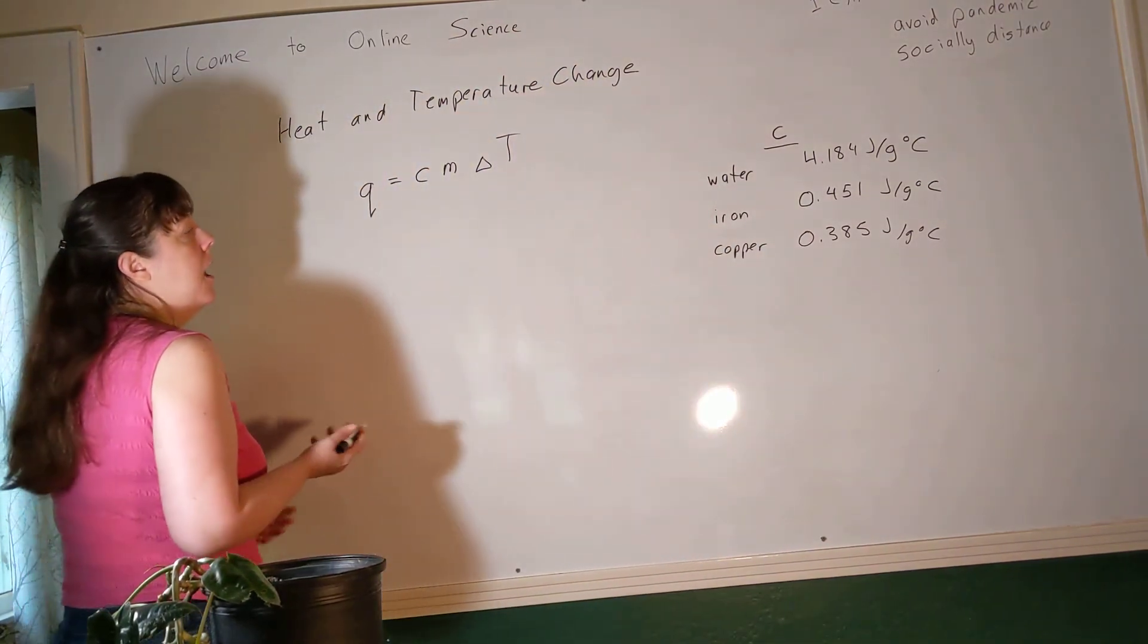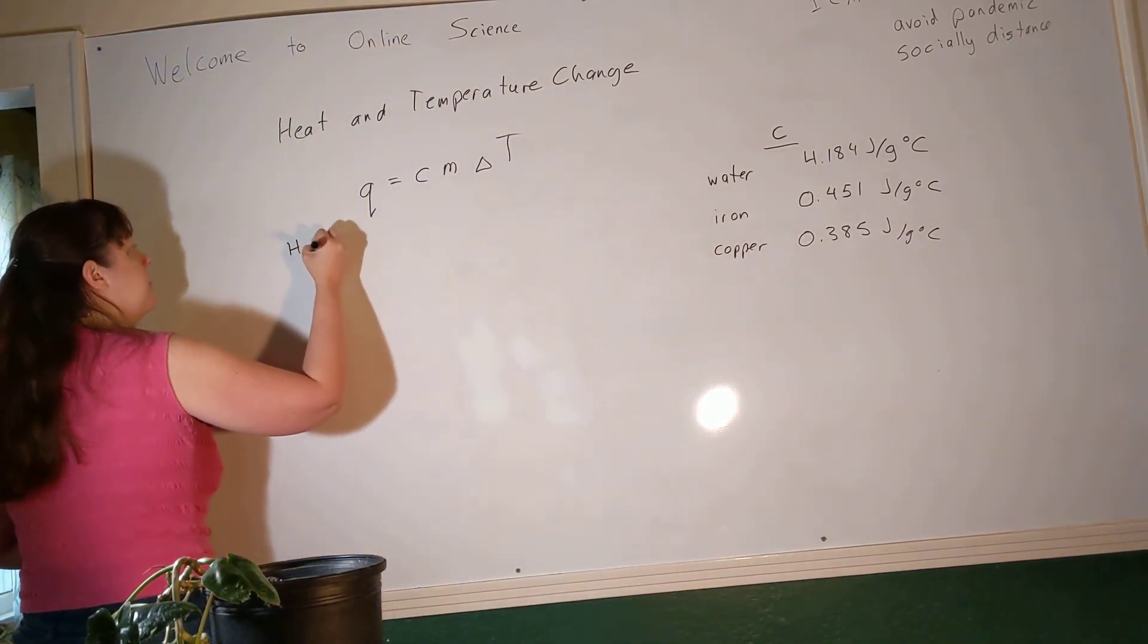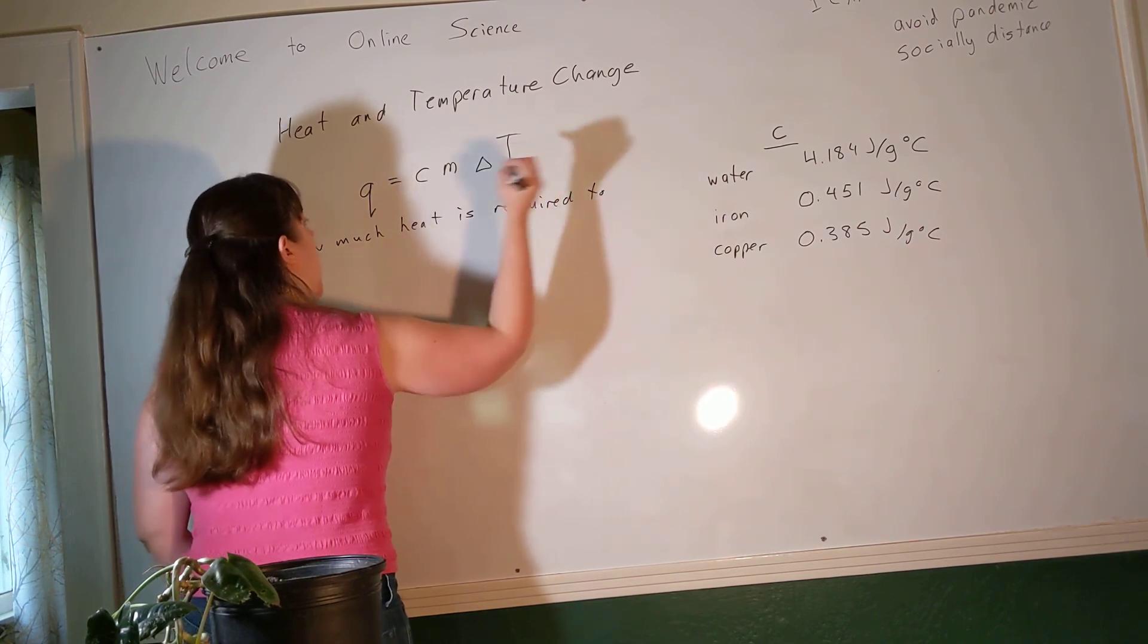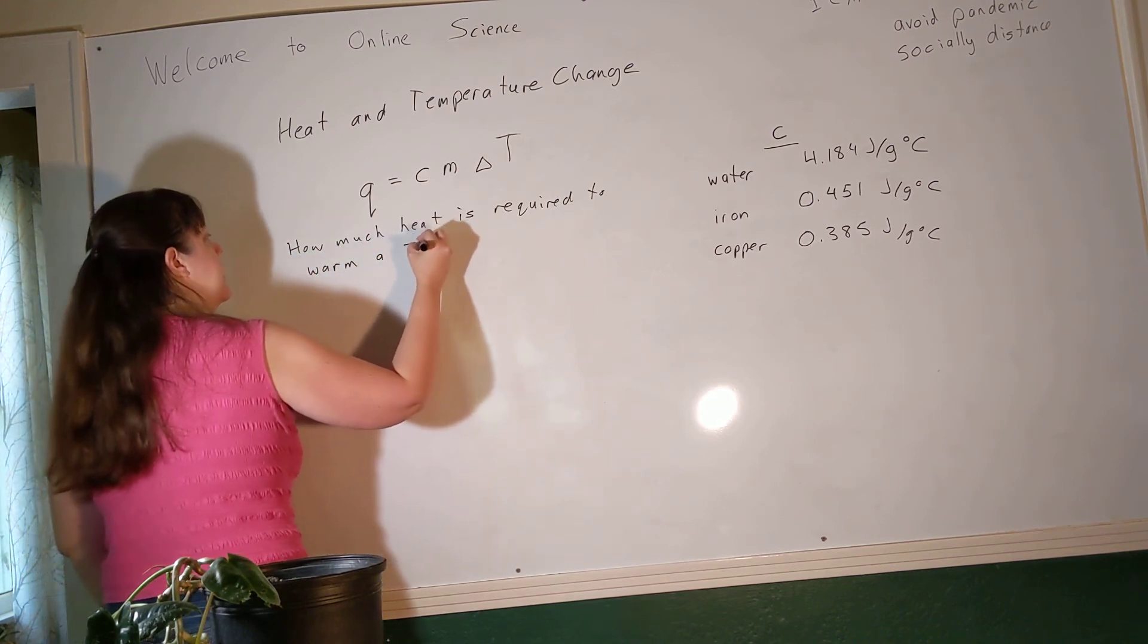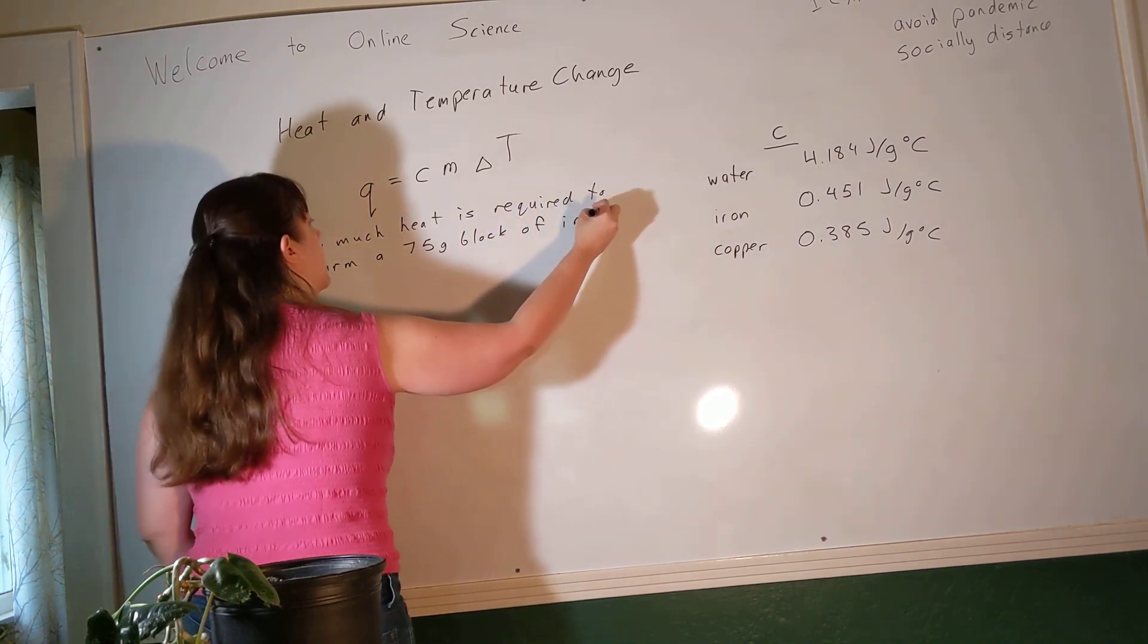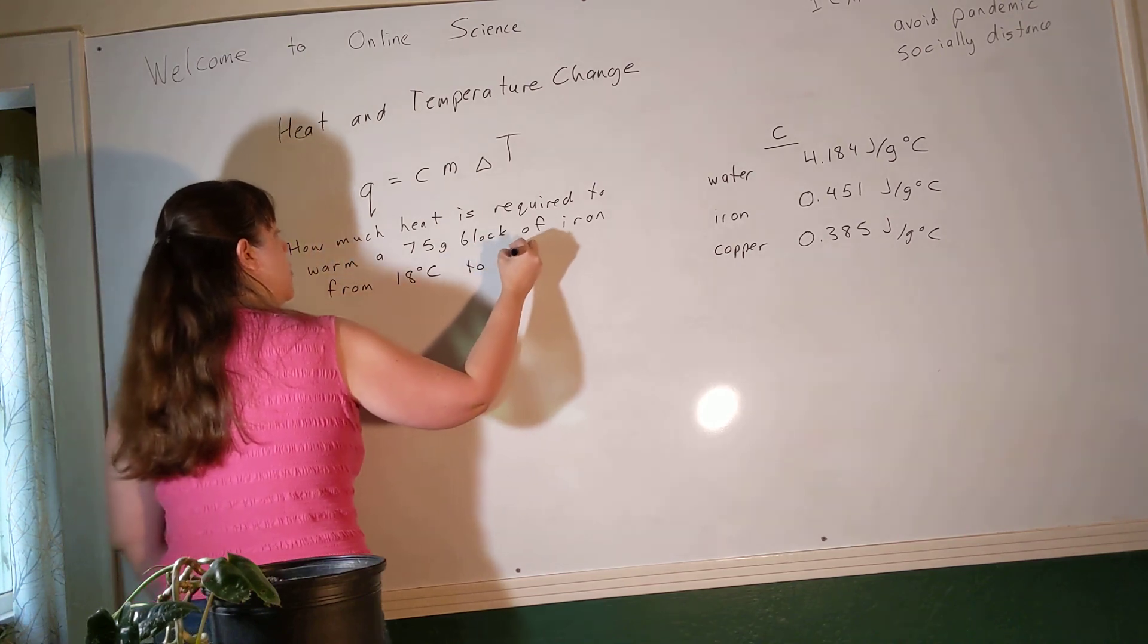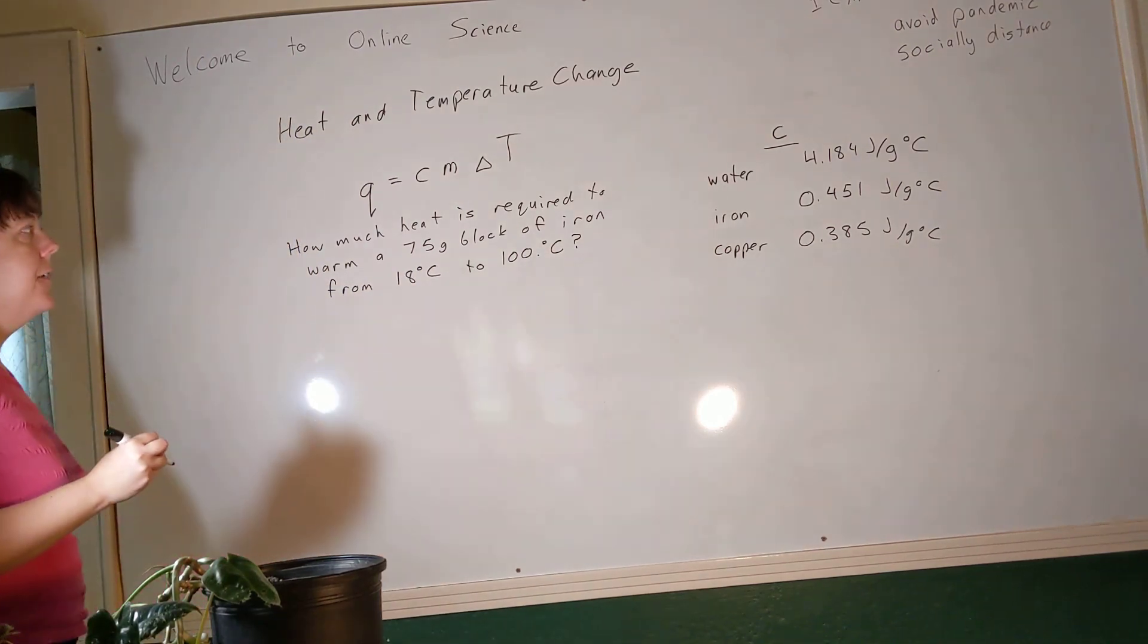I'm just going to plug numbers in here. If I know what, say, if I want to say how much heat, how much use required to warm a 75 gram block of iron from 18 degrees Celsius to 100 degrees Celsius. How much heat is required to warm a 75 gram block of iron?